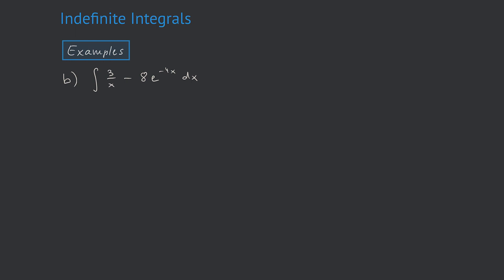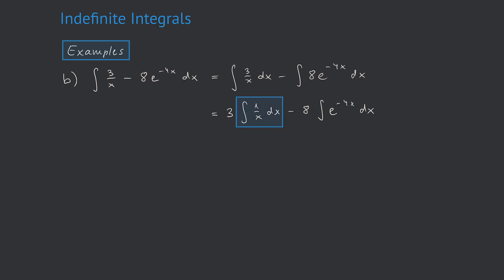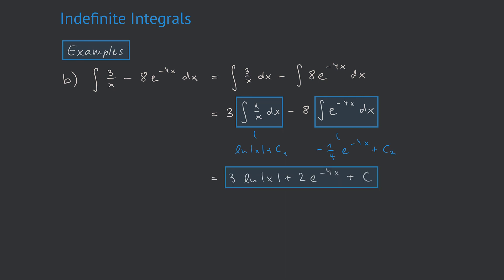Let's do another example. In the first step we split up the sum — a difference in this case — followed by pulling the constants in front of the integral signs. Two elementary integrals remain: the integral of 1 over x and the integral of e to the power of negative 4x. The antiderivative of the first is ln of the absolute value of x, and the integral of the second is negative 1 over 4 times e to the power of negative 4x. Putting this together and simplifying the constants, we obtain the result. As always, we can verify by differentiating and checking we receive the original function.